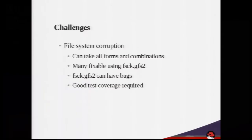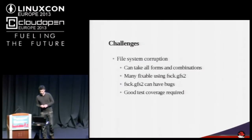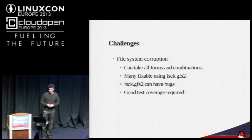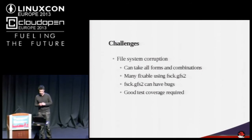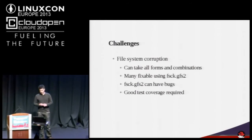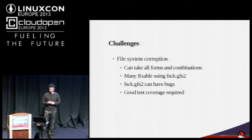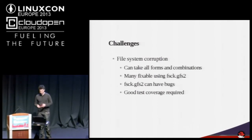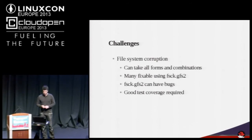So what are we trying to achieve with this language? File system corruption is a fact of life — it can come from power outages, faulty hardware, sunspots, whatever. Much of this you can fix with FSCK as long as it has enough context to rebuild the file system metadata and get it back into a consistent state. But FSCK can also have bugs, so you need good test coverage of FSCK.GFS2 to be confident that it can fix all of the corruption scenarios you expect it to.